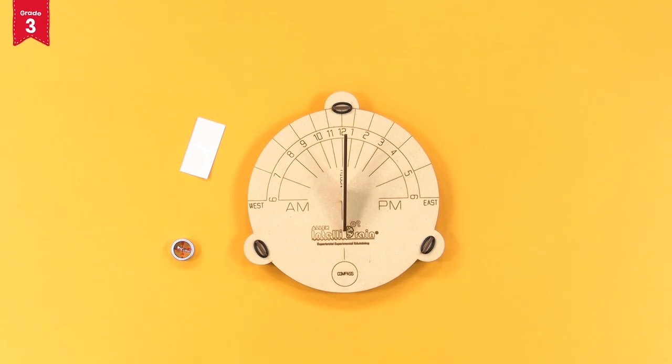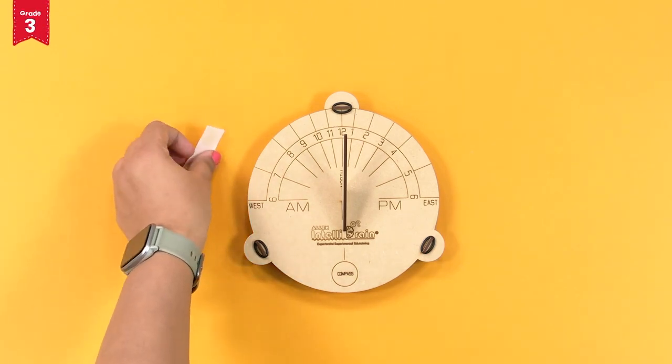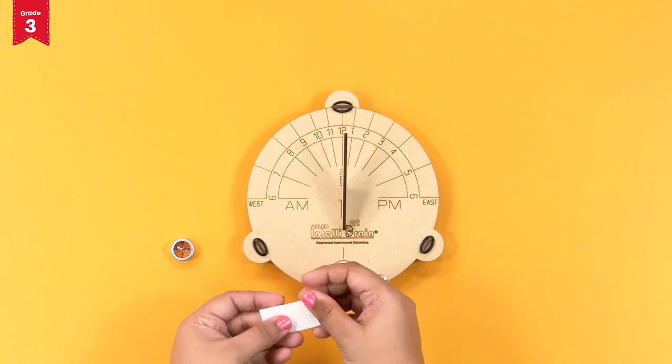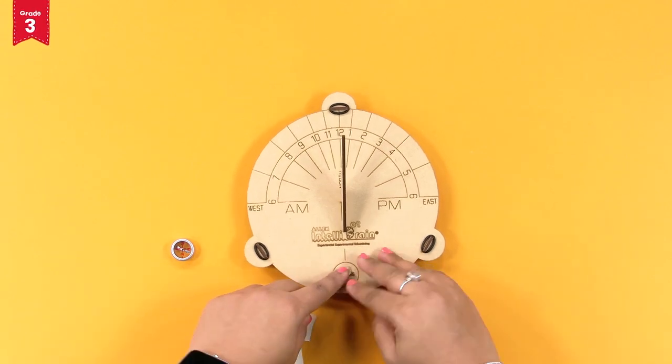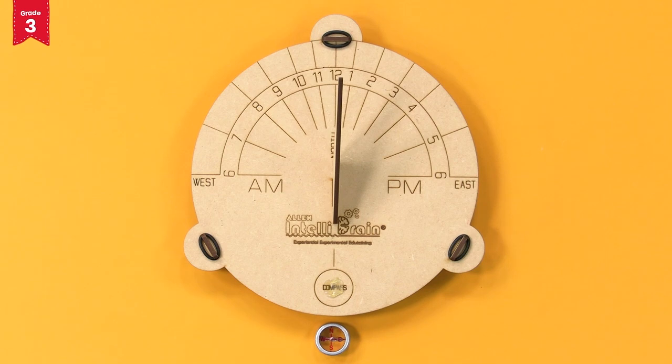Now, stick a glue drop on the marked circle of the sundial base. Then stick the compass on this glue drop like this.